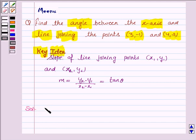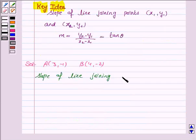The given points are A(3,-1) and B(4,-2). Now, the slope of the line joining the points (3,-1) and (4,-2) is given by (-2-(-1))/(4-3).